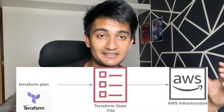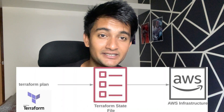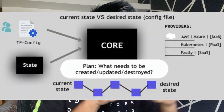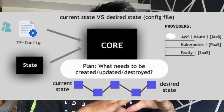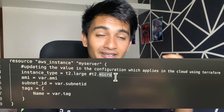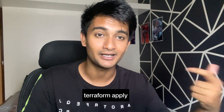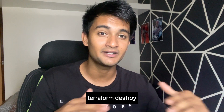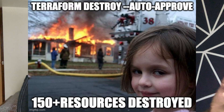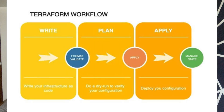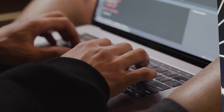Terraform also manages state, keeping track of all changes happening in the cloud and making sure it matches your desired configuration. Once applied, you will see your resources in the cloud. If you want changes, update your infrastructure configuration and apply again. Lastly, if you don't want your infrastructure anymore, run the destroy command and Terraform will destroy everything defined in your configuration. This is the Terraform workflow.